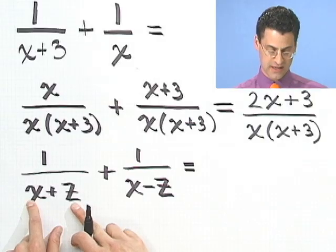OK, well to get a common denominator, I'm going to multiply the top and the bottom by this bottom, which is x minus z, and top and bottom here by this bottom, which is x plus z.